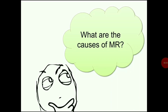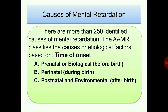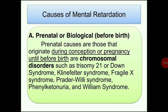The causes of mental retardation are classified as prenatal or biological before birth, perinatal during birth, and postnatal and environmental after birth. Prenatal causes originate during conception or pregnancy until before birth and include chromosomal disorders such as Trisomy 21, Down syndrome, Klinefelter syndrome, Fragile X syndrome, Prader-Willi syndrome, Phenylketonuria, and Williams syndrome.